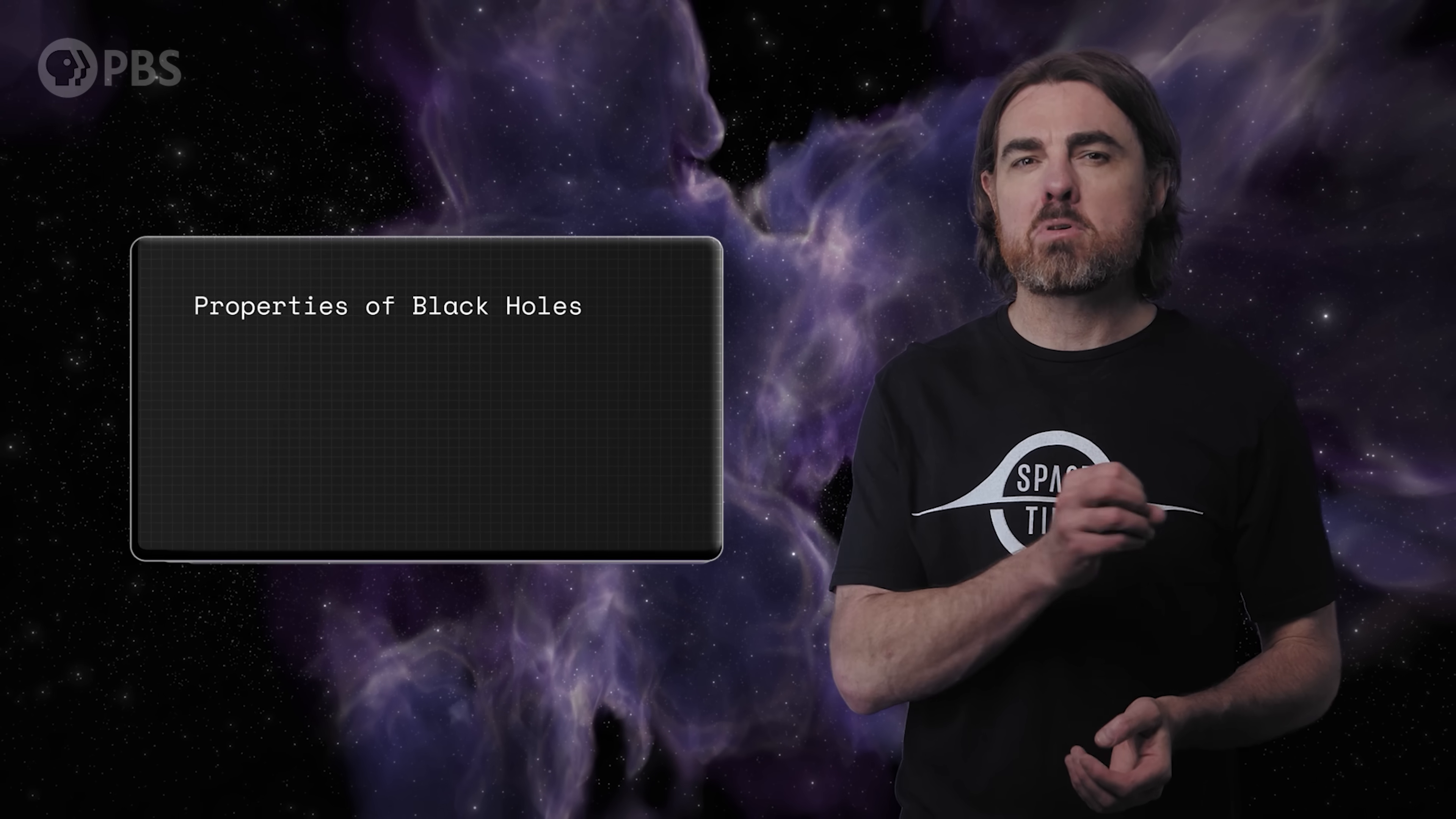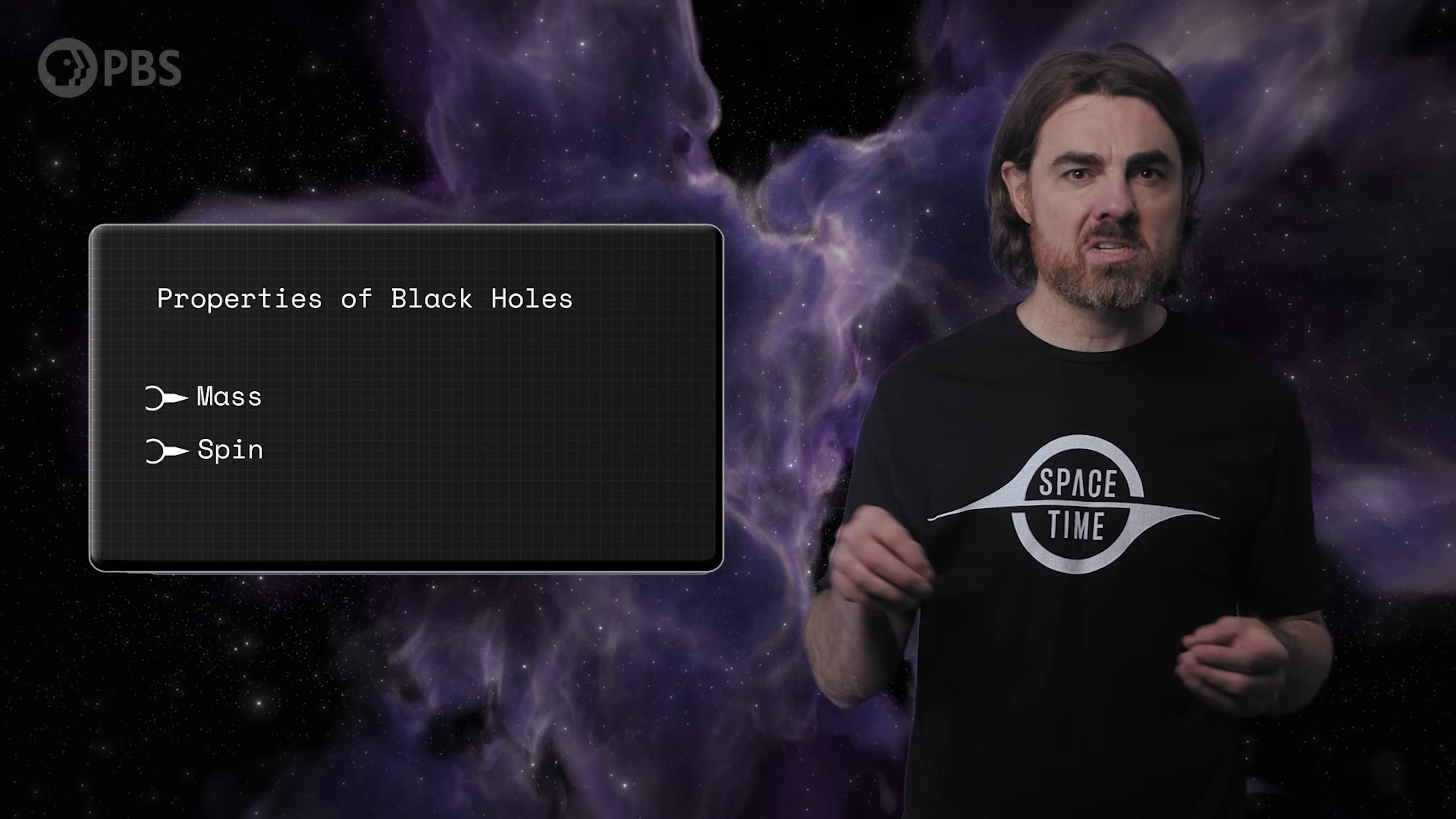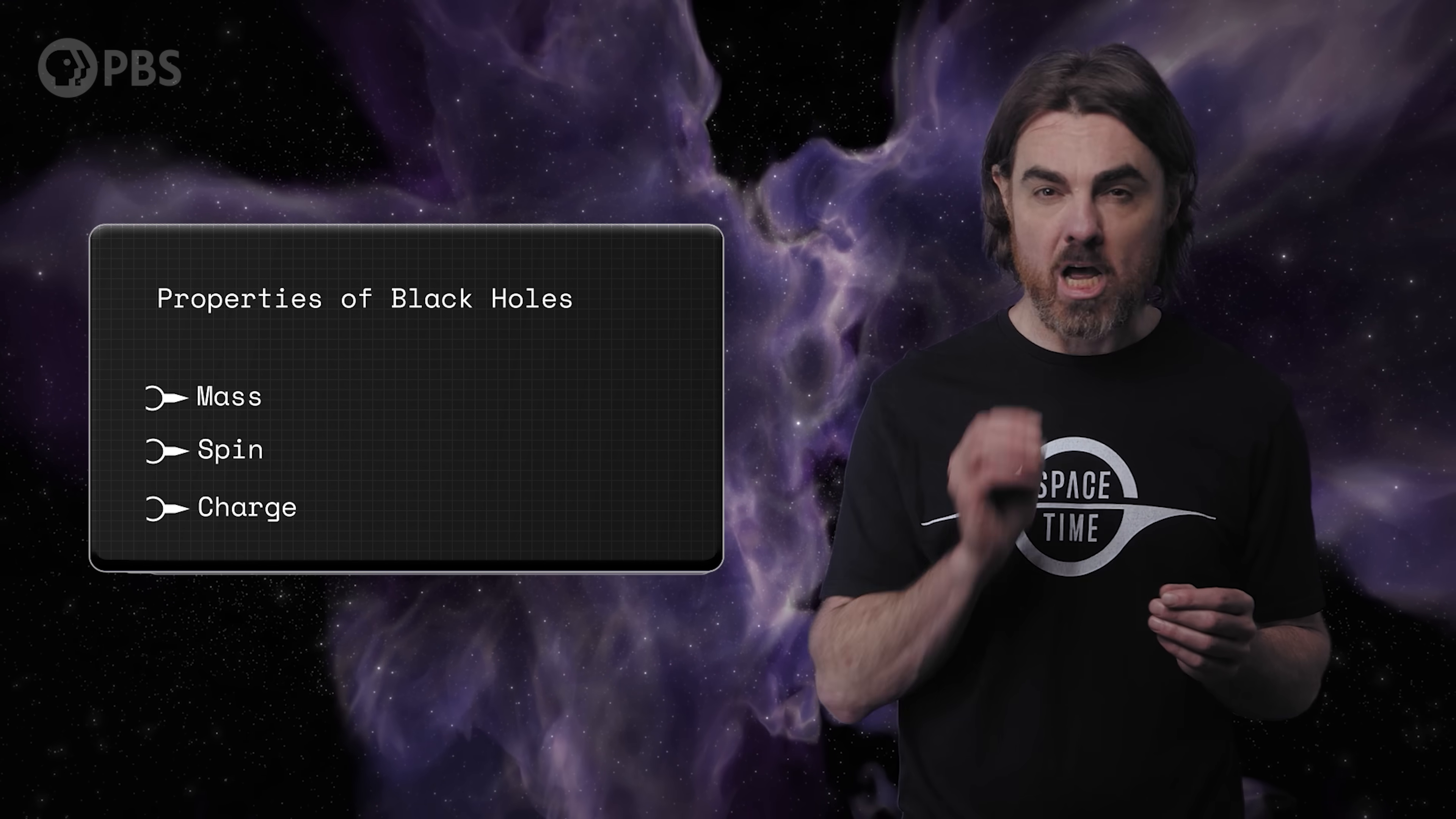Mass seems to be the most important property distinguishing one black hole from another because it determines the size of the event horizon. The rotation of a black hole, its spin, is the next most important because it squishes that otherwise spherical event horizon and drags the fabric of space around a black hole. But according to the no-hair theorem of Jacob Bekenstein, black holes can have three properties, and only three: mass, spin, and charge.